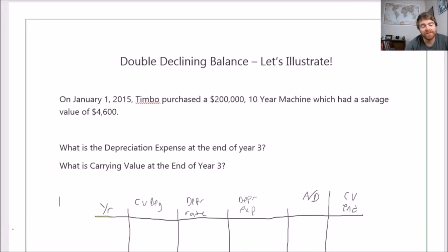All right, hey there students. In this video today, I'm going to illustrate to you how to calculate depreciation expense and accumulated depreciation using the double declining balance method. The question is asking what is the depreciation expense at the end of year three, and what is the carrying value at the end of year three.